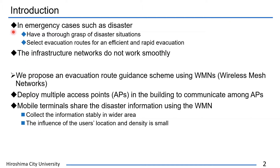In emergency cases such as disaster, users need to have a thorough grasp of disaster situations and select evacuation routes for an efficient and rapid evacuation. However, there is a possibility that the infrastructure networks do not work smoothly because of the failures of base stations and the traffic congestion in emergency cases.